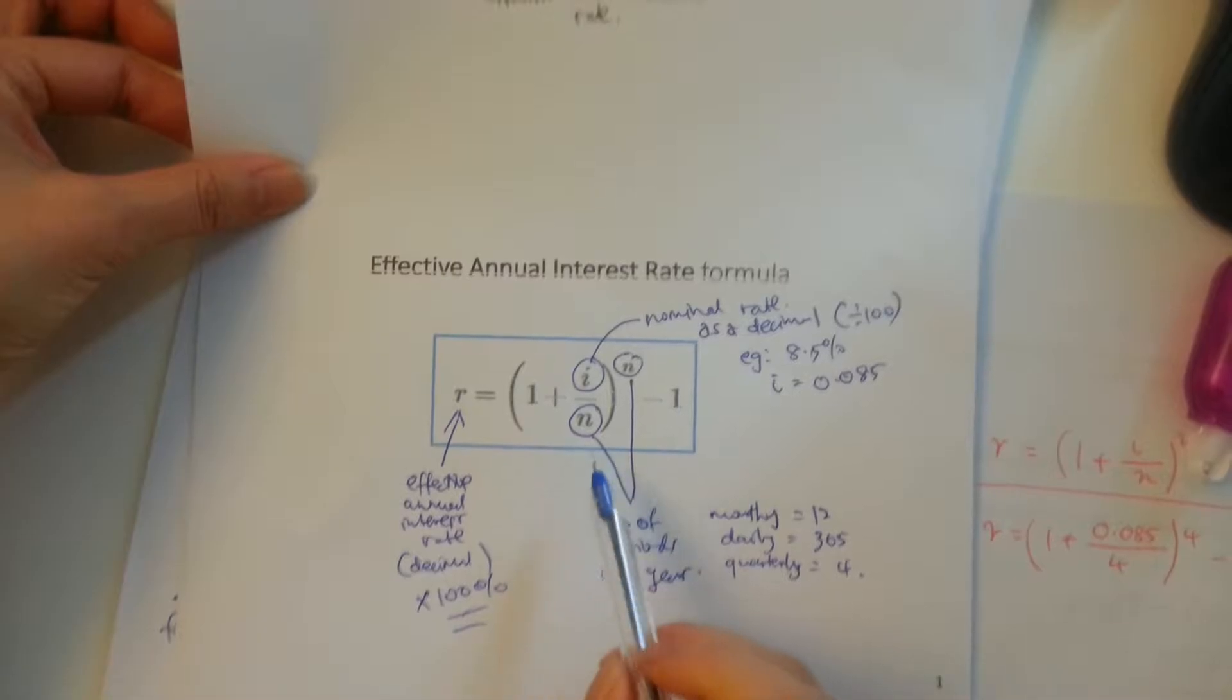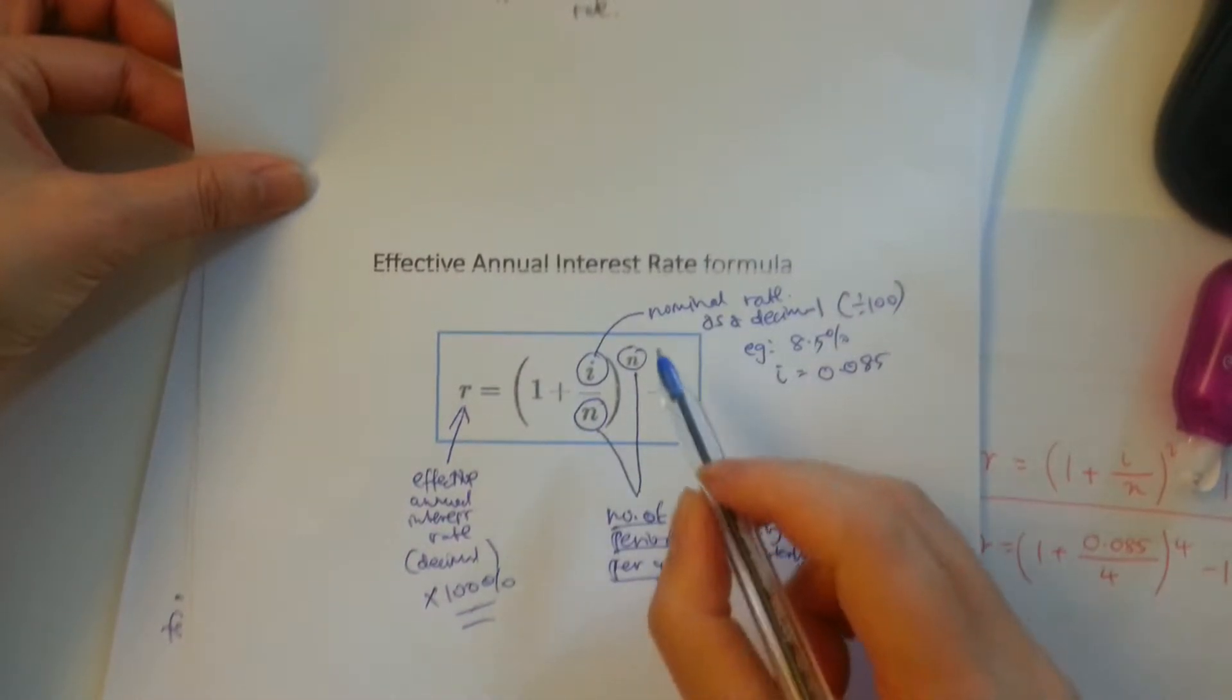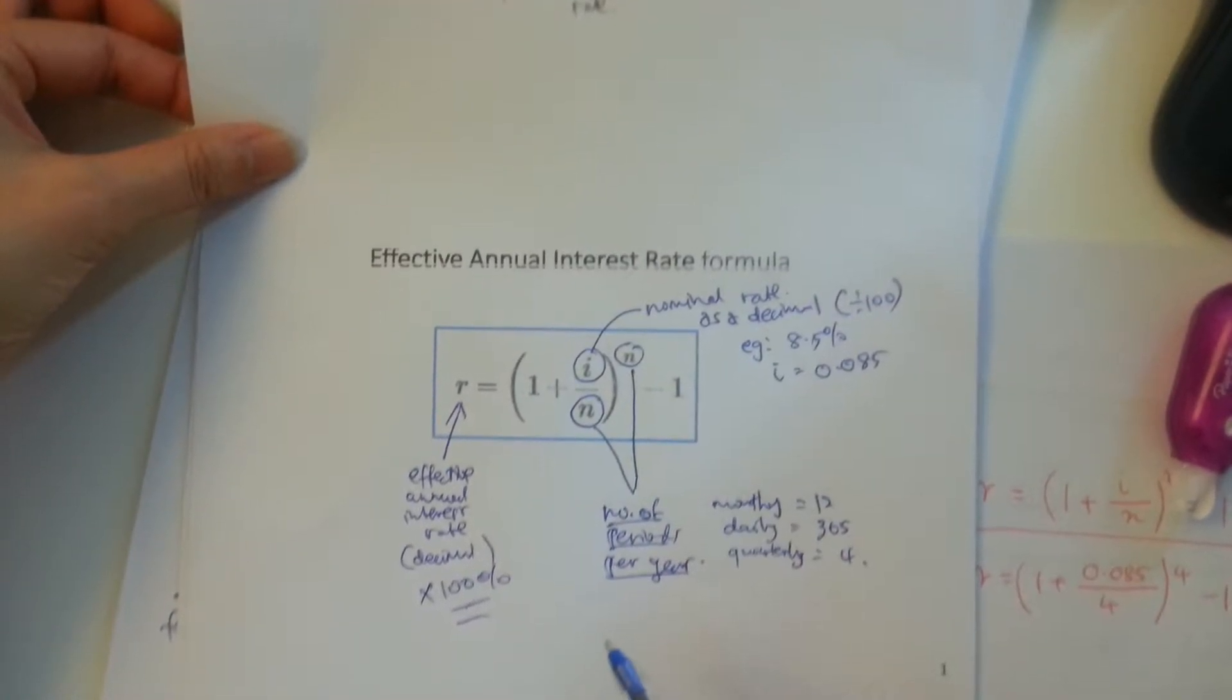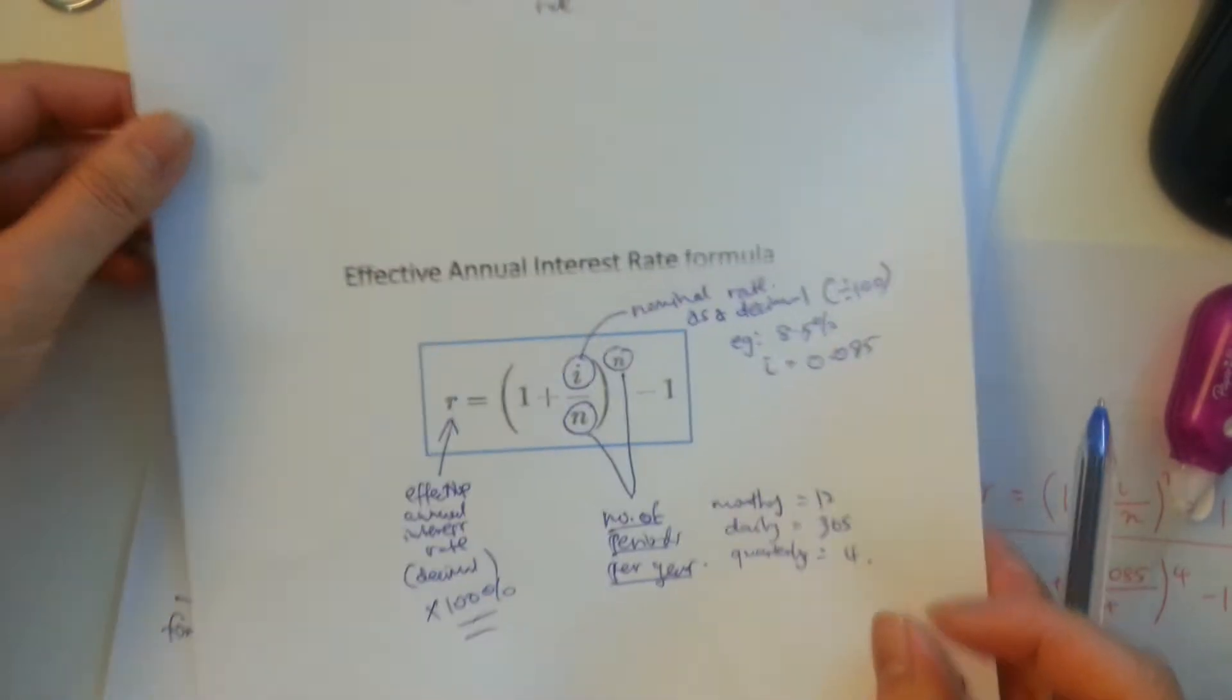So it's not the kind of N that we were dealing with previously. This basically is just the number of periods per year. I know it's really confusing, but that's how they want you to learn it. And then you just have to subtract it by one. So it's really easy.